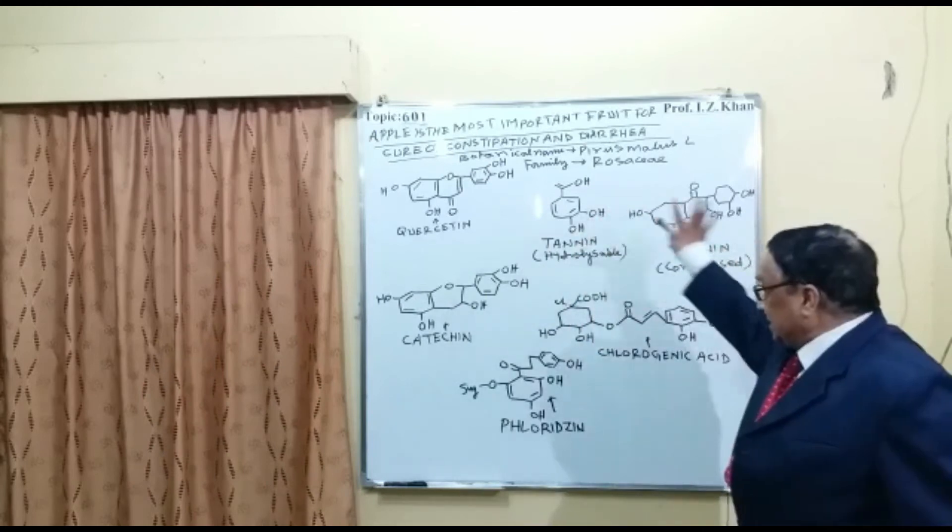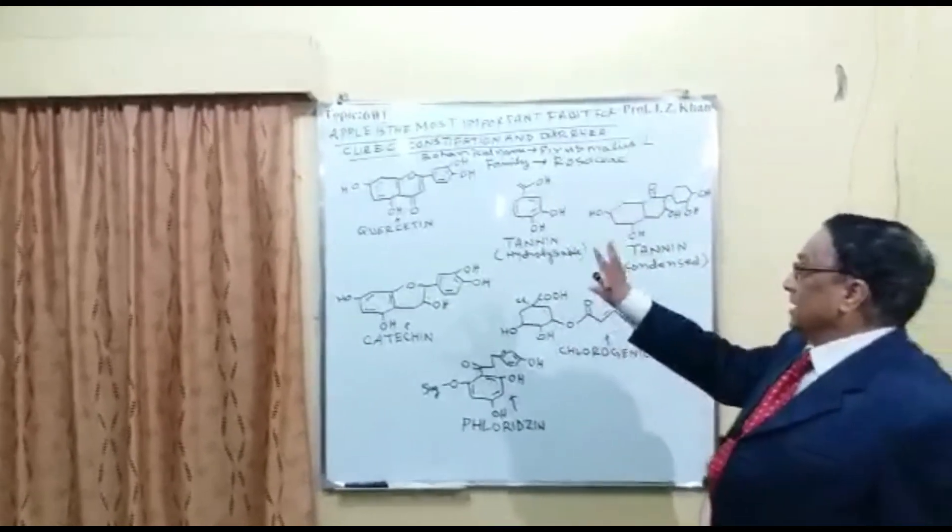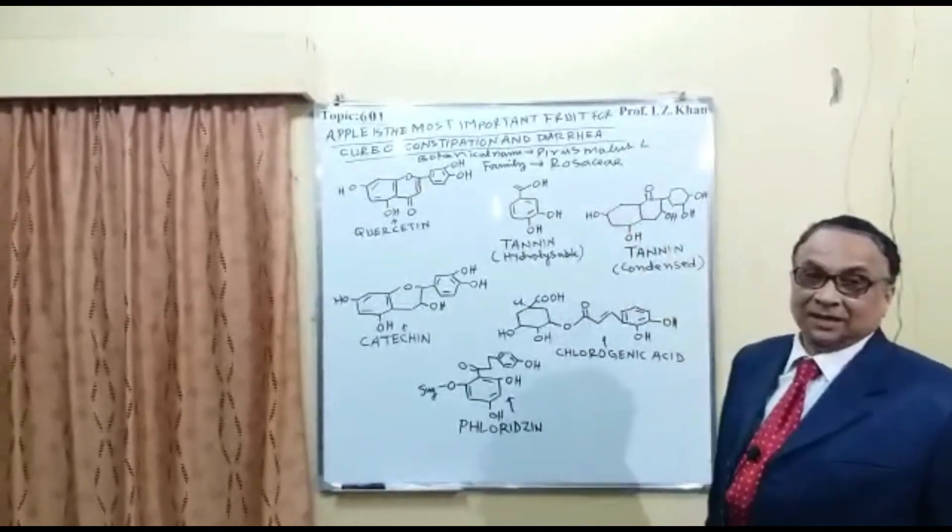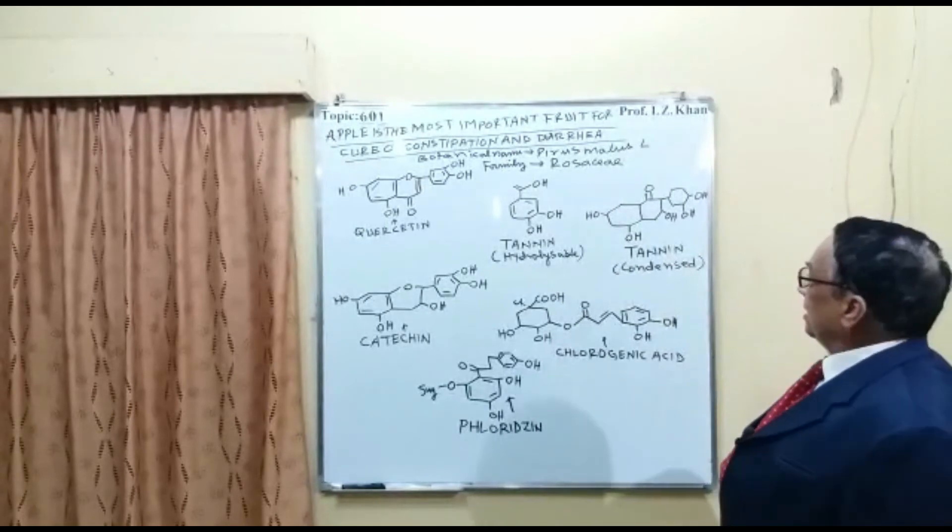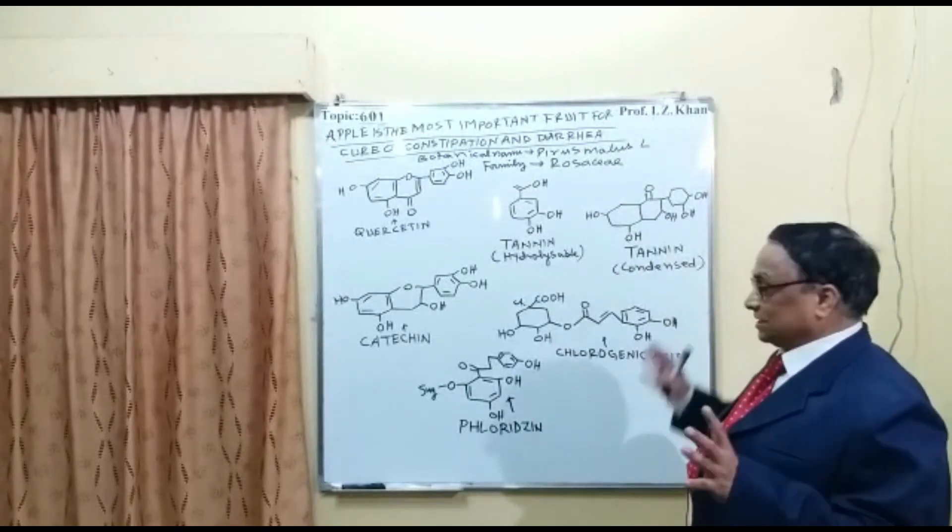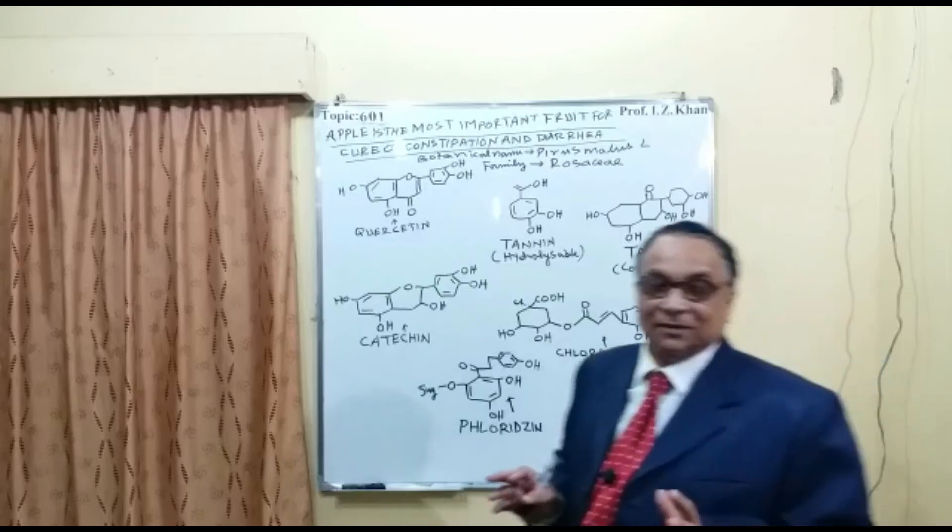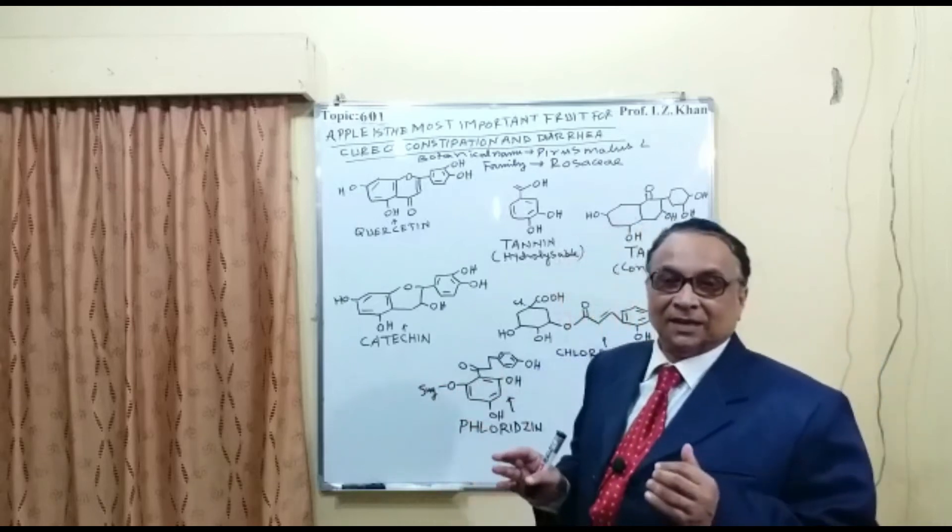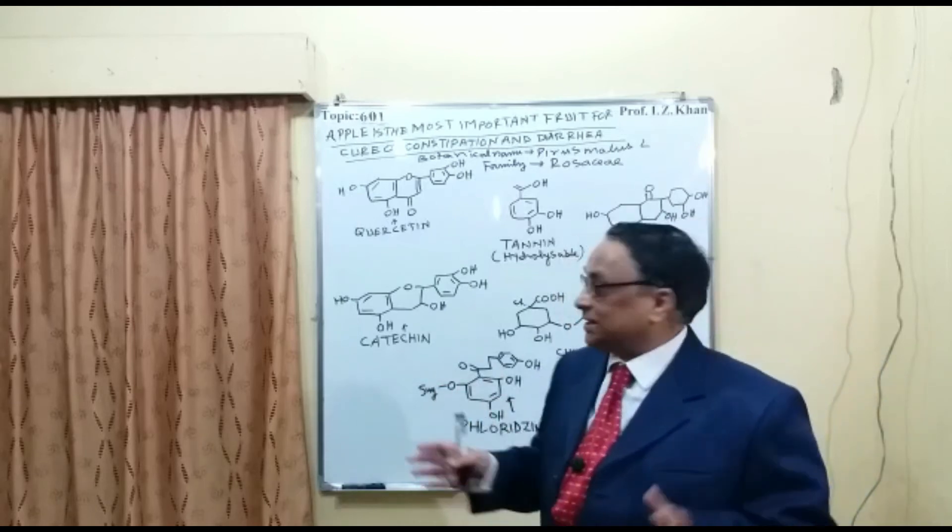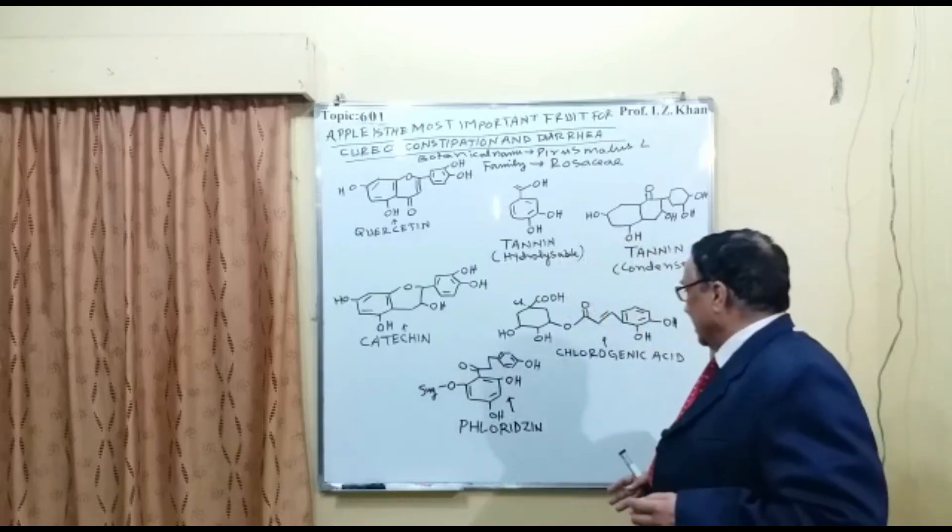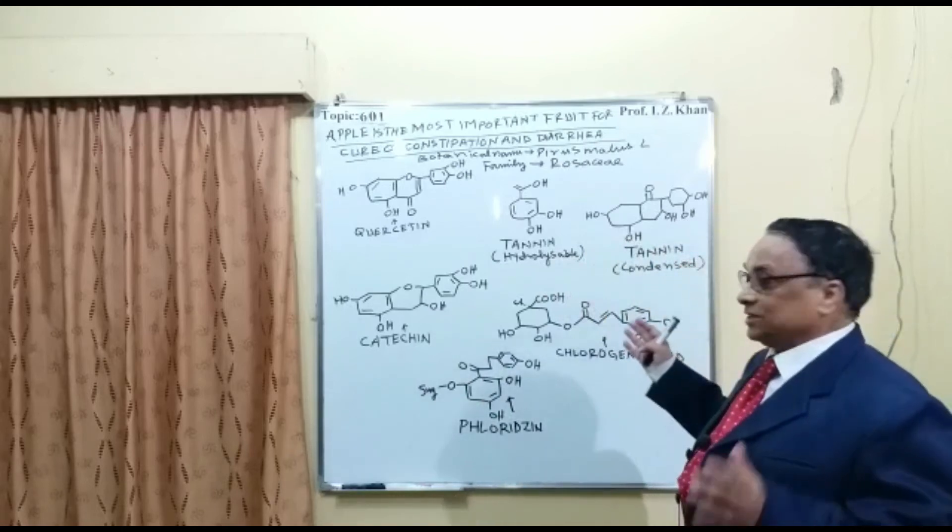If you take all these, these are all therapeutic polyphenolics which are present in apple. These polyphenolics are very important like catechin, like quercetin, like tannin, like chlorogenic acid. They are so powerful.